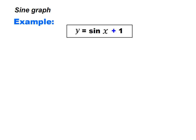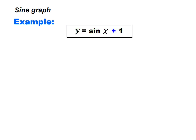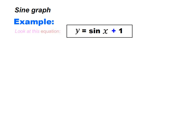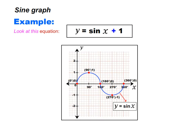Let us have a look at another example. We want to sketch the graph of y is equal to sin x plus 1. By looking at this equation, we can see that each y value in our coordinates will be added with 1. Let me explain this using a graph. Look at the original graph, which is the graph of y is equal to sin x.